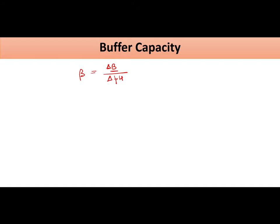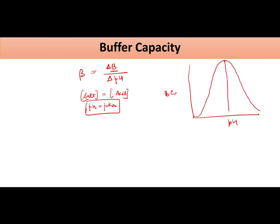My buffer will have maximum capacity when the concentration of salt is equal to the concentration of acid. This will happen when pH is equal to pKa. When pH equals pKa, salt and acid concentration is equal. When your salt and acid concentration is equal, buffer will have maximum capacity. So if you draw a plot between buffer capacity and the pH, you will find this type of curve where the maximum point will show the pKa of your buffer.